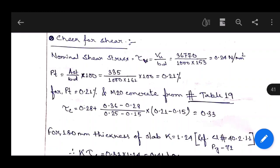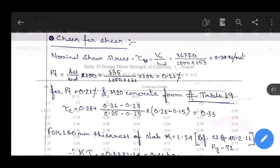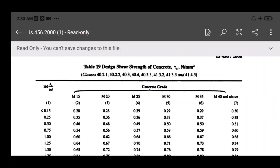AST is 335 by b is 1000 and d is 161 times 100, equals 0.21 percent. For percentage of steel 0.21 percent and M20 grade concrete, we have to find tau_c from table 19 of IS 456:2000. Let's check table 19, design shear strength of concrete tau_c.